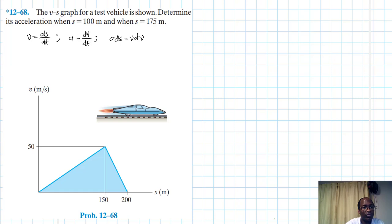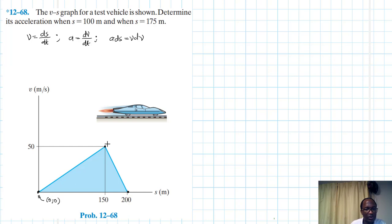First things first, let's find the equation that governs these lines across these intervals: from 0 to 150 meters, and then from 150 to 200 meters. The coordinates are: (0, 0), (150, 50), and (200, 0).